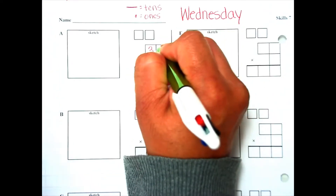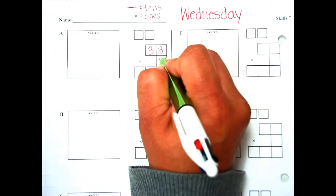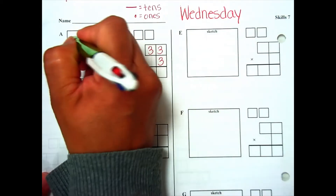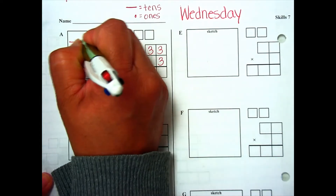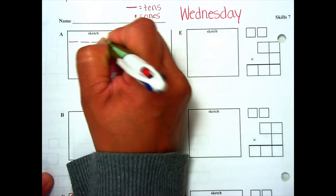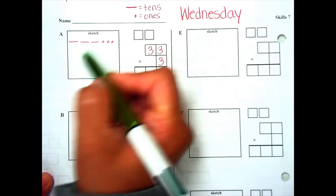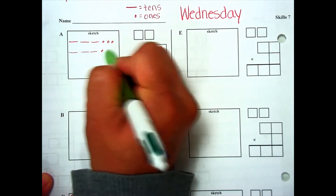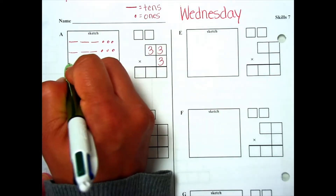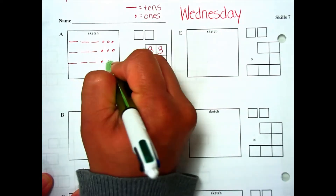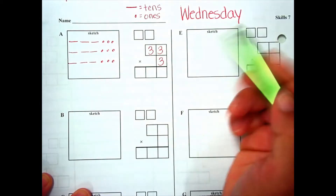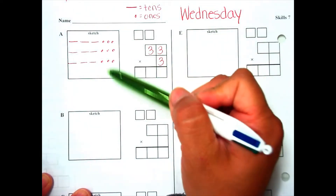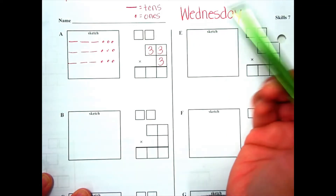Our first problem is 33 times 3. We're going to have 3 rows with 33 in each row. Let's go ahead and sketch it out: 10, 20, 30, 31, 32, 33 — three times. That's three groups of 33. Now let's look at our ones place.